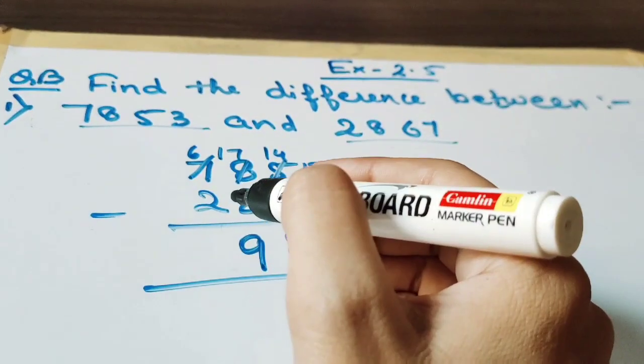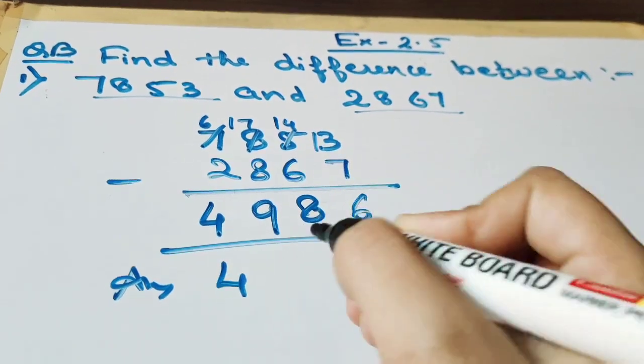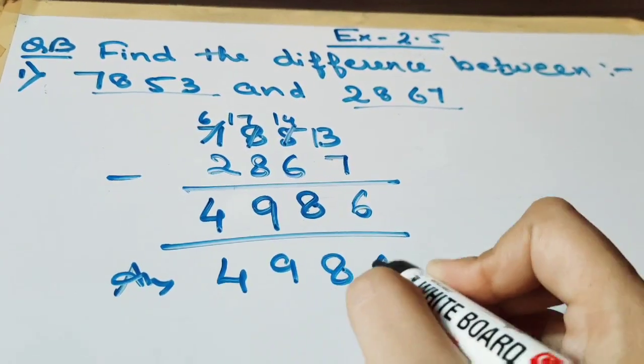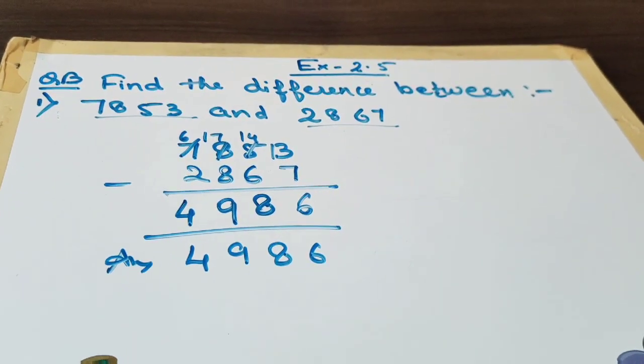And 6 minus 2 is 4. So we got the answer 4,986. This is the answer. I will explain one more question of difference.